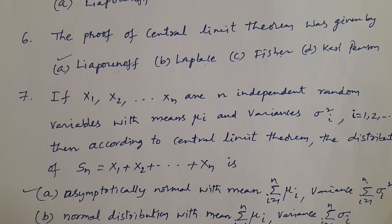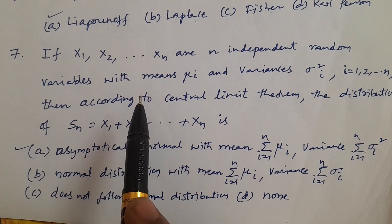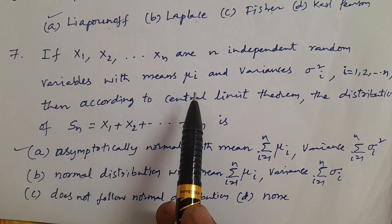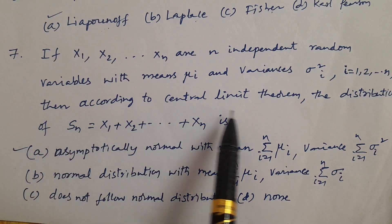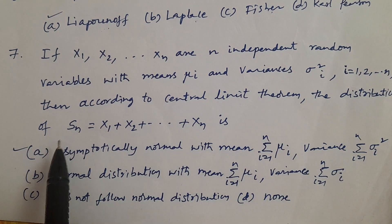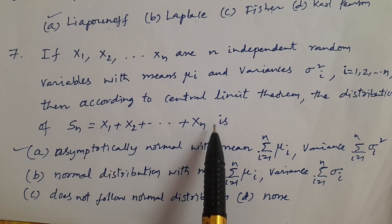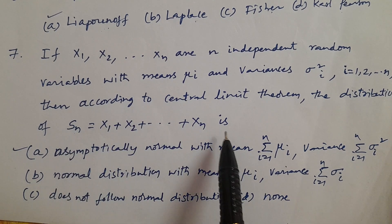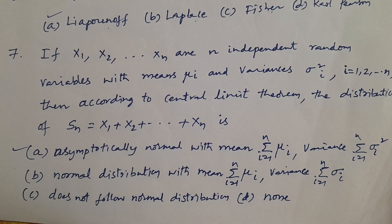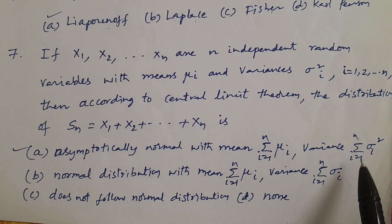Question number 7. If X1, X2, and so on Xn are n independent random variables with means μᵢ and variances σᵢ², for i = 1 to n, then according to the central limit theorem, the distribution of Sn — where Sn = X1 + X2 + ... + Xn — is asymptotically normal with mean summation μᵢ and variance summation σᵢ².